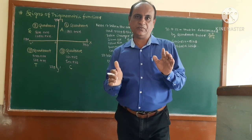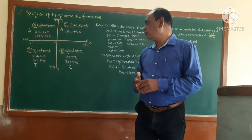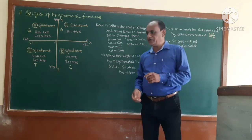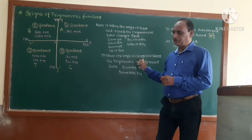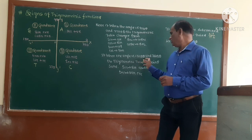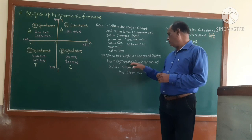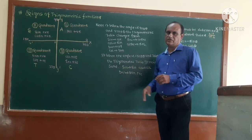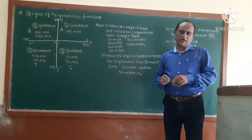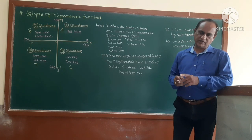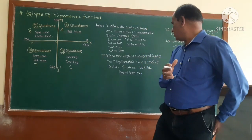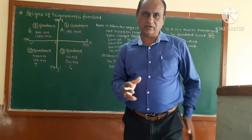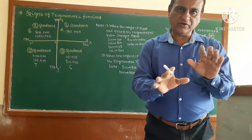The second note: when the angle is 180° ± θ or 360° ± θ, the trigonometric function names do not change — only the sign (plus or minus) must be determined by the quadrant rule.